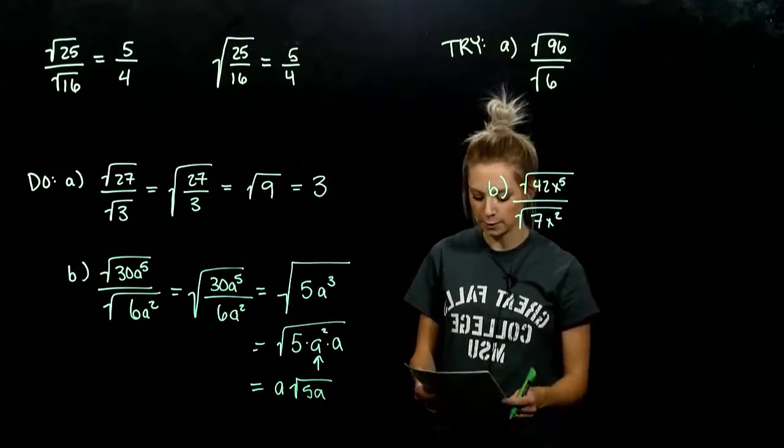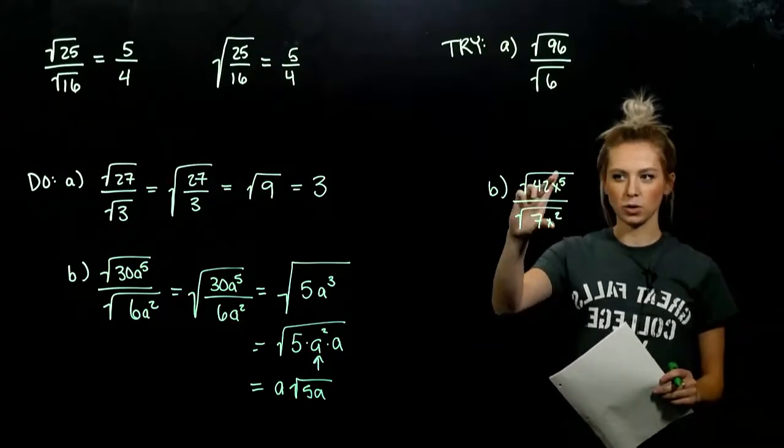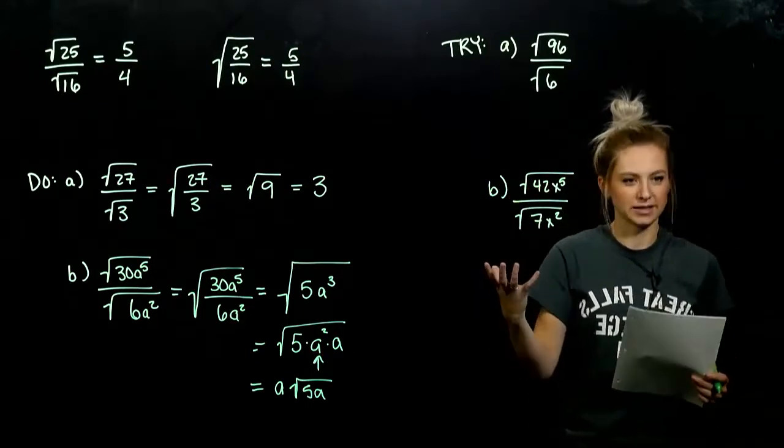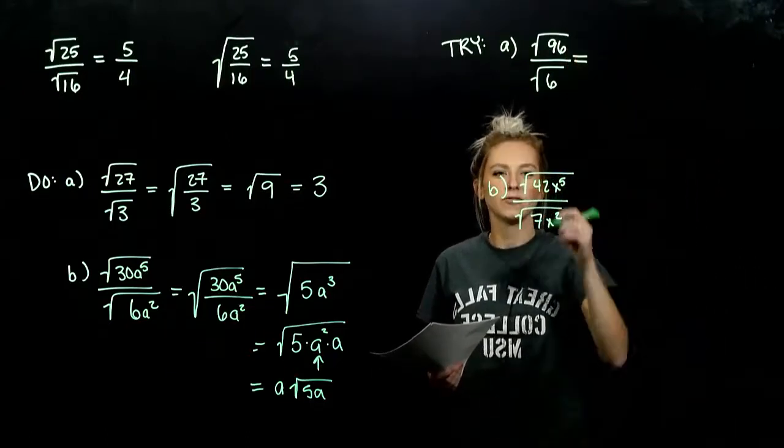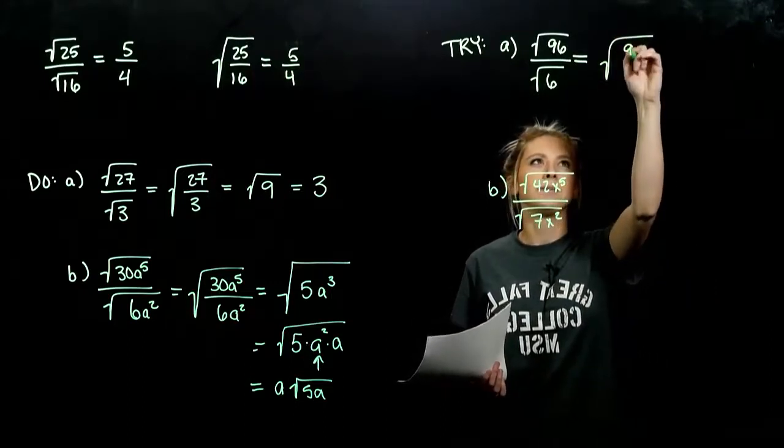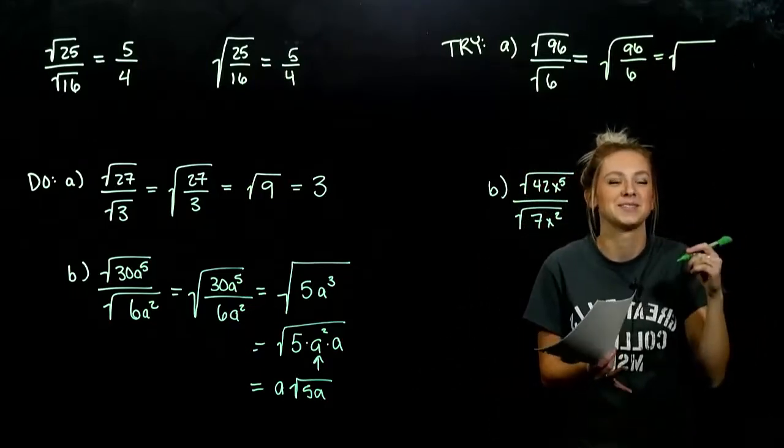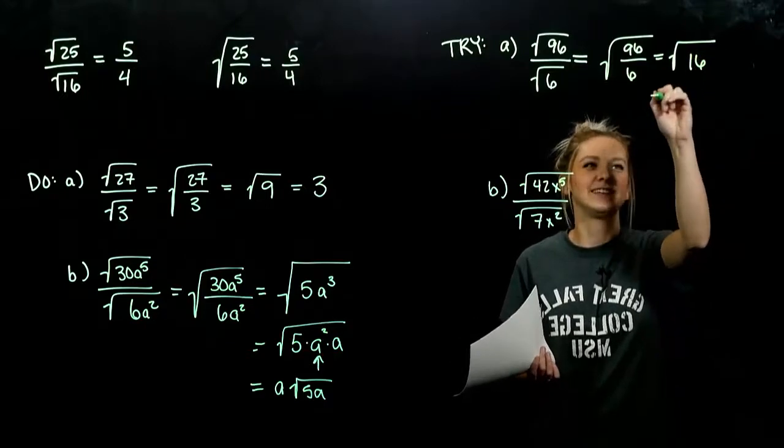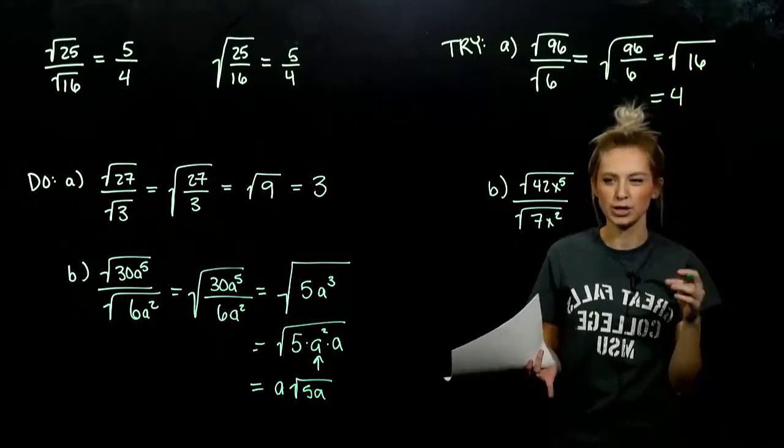Go ahead and take those next two, combine them into one radical. And again, we're always assuming any variable represents a positive, nice number. So in part A, what are we getting? Trying to evaluate individually isn't going to be very helpful. But if we combine it, what is 96 divided by 16? Divided by 6. 16. And its principal, or positive root, is 4. Done. Pretty straightforward.